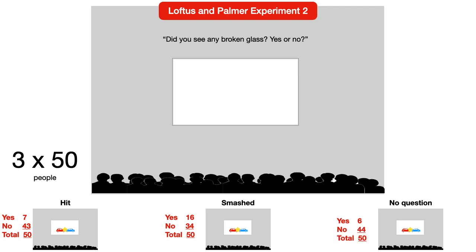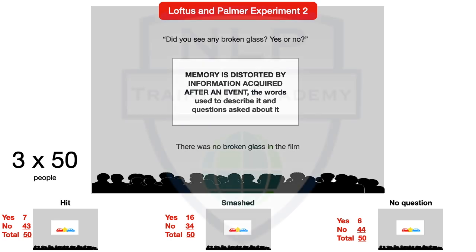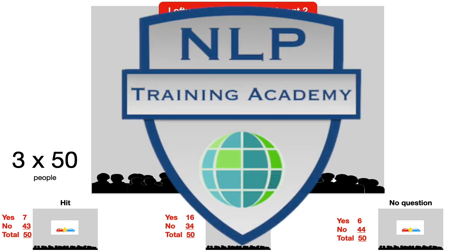Interestingly, there was no broken glass in the film. The results showed how false memory can be created and how memory is distorted by information acquired after an event, the words used to describe it, and the questions asked. In NLP, we use language on purpose to help people change, re-memorise, and improve. Use your brain to change your life — learn NLP with Excellence Assured.